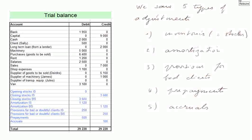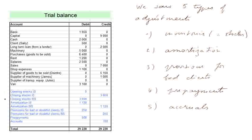We saw five types of adjustments. Adjustments for inventories were taken care of by these accounts. Because we are in the first accounting cycle, there is an opening stock IS with zero, and then two accounts as usual for an adjustment.